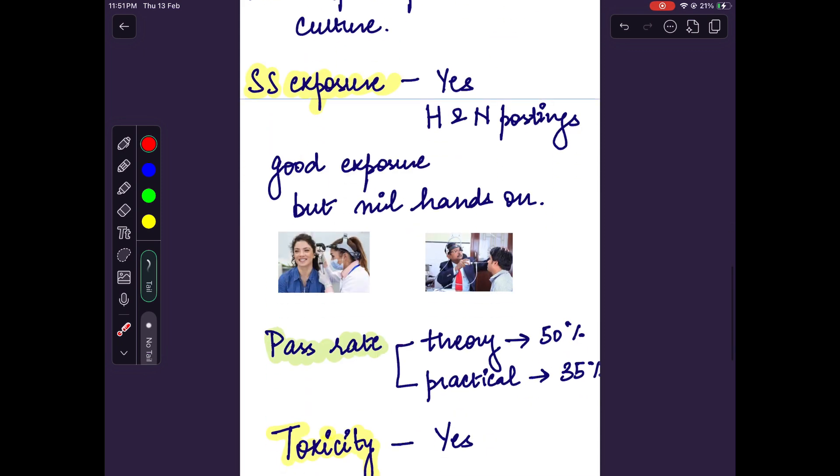The pass rate for the senior batches has been, for theory it has been 50% and for practical it has been around 35%. So passing rate is a bit of an issue in DNB ENT.